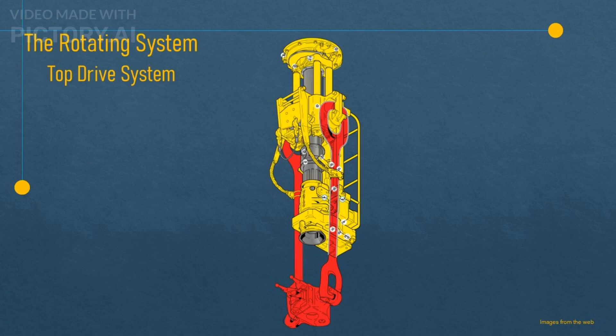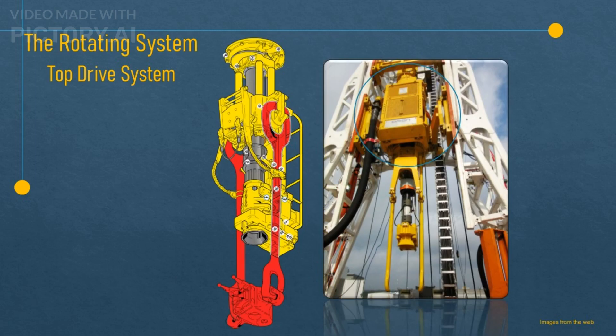So what about the top drive system? This is a newer, more efficient and robust system that has become more popular since the 1980s. It replaces the rotary table, the Kelly, and the swivel, and hangs from the hook directly. The top drive has its own motor and pipe handling system that can rotate the entire drill string and bit directly without using a rotary table or a Kelly. It also has a gooseneck that connects to a hose that supplies drilling fluid to flow down the drill string.